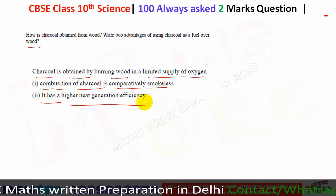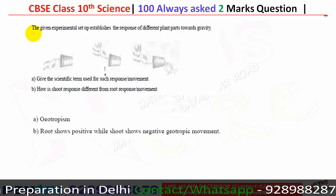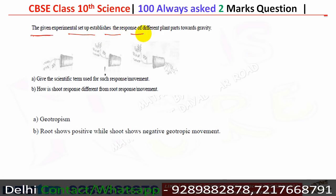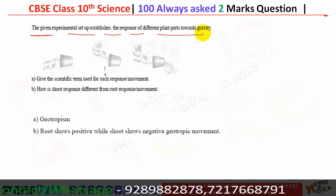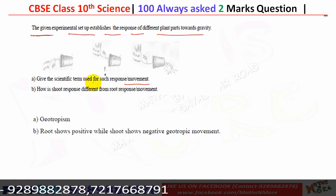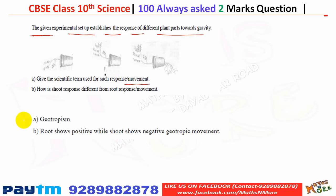The given experimental setup establishes the responses of different plant parts towards gravity. The scientific term for such response is geotropism — when a plant part moves towards a stimulus and that stimulus is gravity. The shoot response differs from root response: root shows positive geotropic movement while the shoot shows negative geotropic movement.